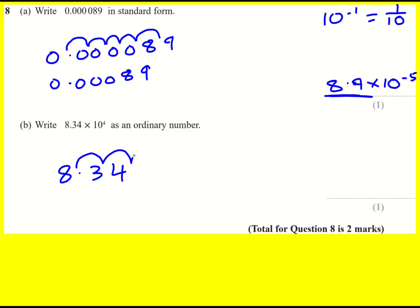So I go 1, 2, 3, 4, fill these in with zeros. The decimal point moves to there and that's therefore going to be my answer, 83,400.